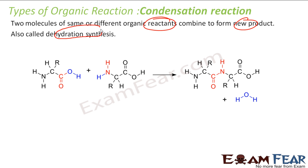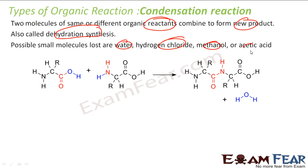This is also called dehydration synthesis. Possible small molecules lost are water, HCl, hydrogen chloride, methanol, or acetic acid. For example, if you see this, this guy and this guy when they're combining, this part is lost and they form this compound.